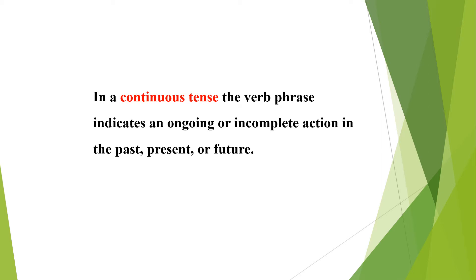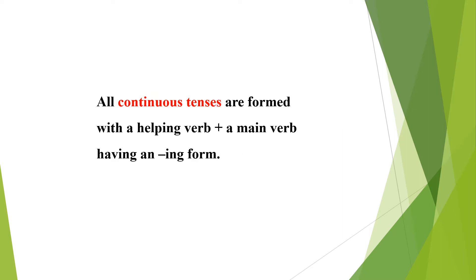In a continuous tense, the verb-phrase indicates an ongoing or incomplete action in the past, present, or future. All continuous tenses are formed with a helping verb plus a main verb having an ing form.